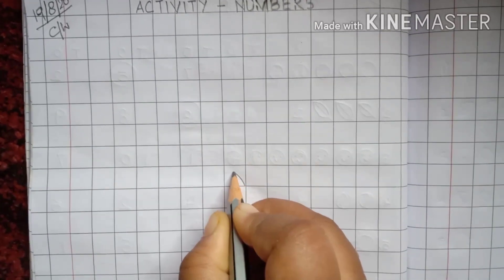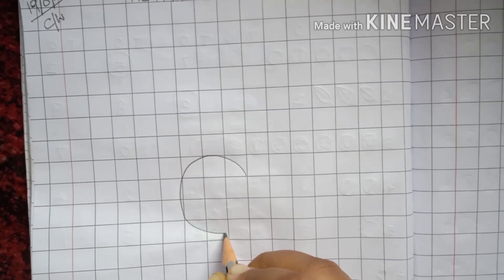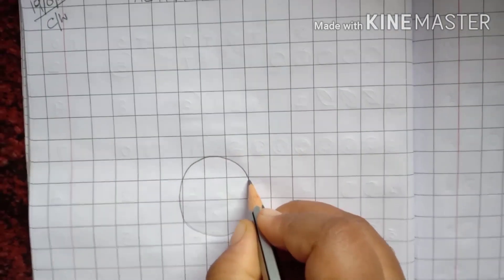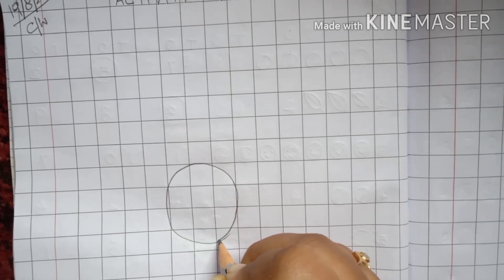So, you all know how to draw a circle. So, first of all, we will draw a big circle like this at the center of your copy.